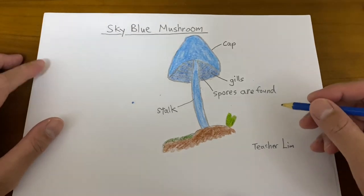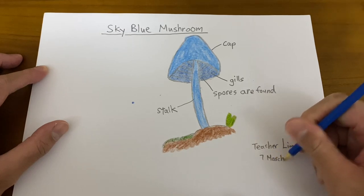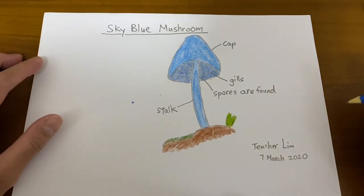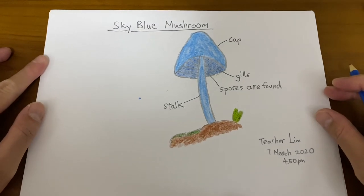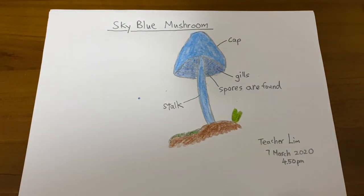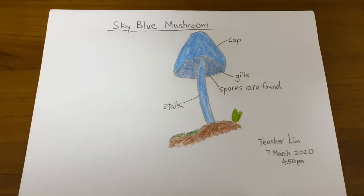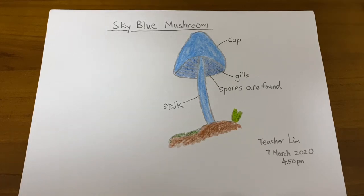I'll just write today's date — today is the 7th of March 2020, at about 4:50pm. I hope that everyone enjoyed this simple demonstration. I hope everyone can draw, label, and color their own mushroom as well. Mushroom is a fungi, so find a mushroom you like online, follow its image closely, and produce a similar drawing and labeling. Thank you so much for watching everyone — see you soon.